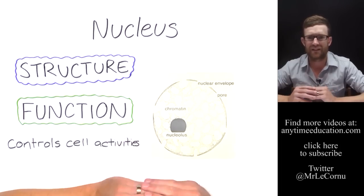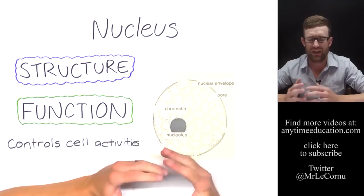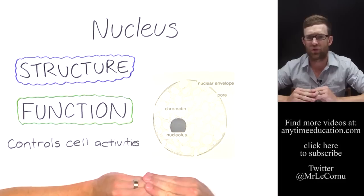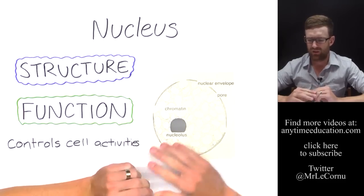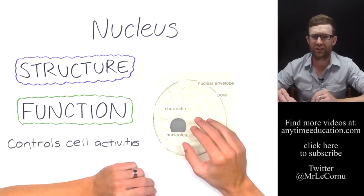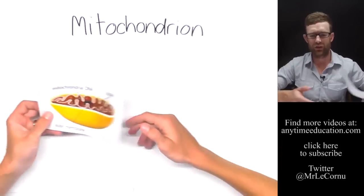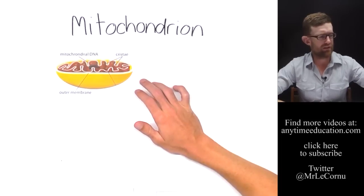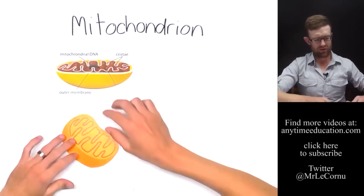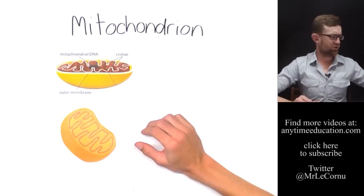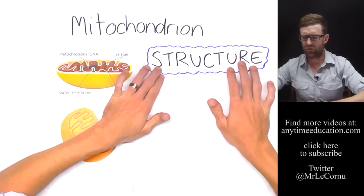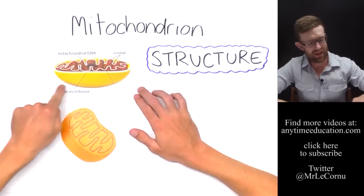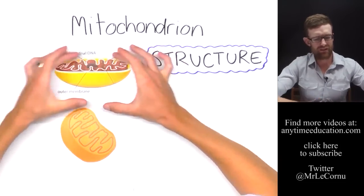The nucleus controls cell activities because it contains the DNA, or genetic information, which holds all the information to help control cell activities. The plural term for nucleus is nuclei. The next organelle is called the mitochondrion, and here's a diagram of one.